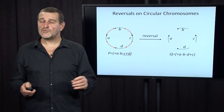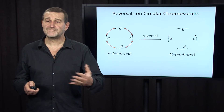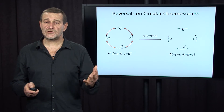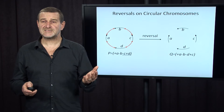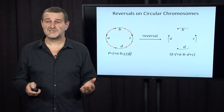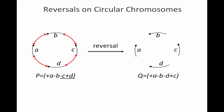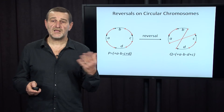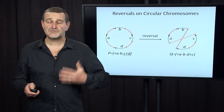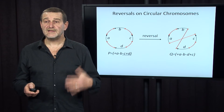Now let's figure out how a reversal looks in terms of this graph. We start with genome P: plus A, plus B, minus C, plus D. We make a reversal resulting in genome Q: plus A, minus B, minus D, plus C. In the graph model, after plus A we go to minus B, after minus B to minus D, after minus D to plus C, and from plus C back to plus A. So transformation of genome P into genome Q corresponds to a transformation of the graph.